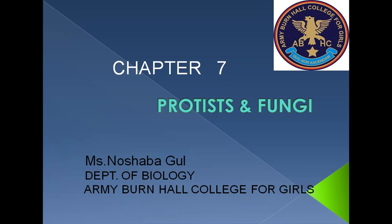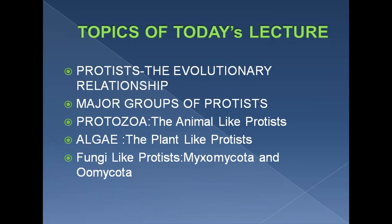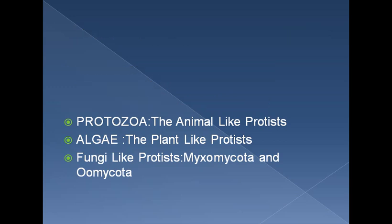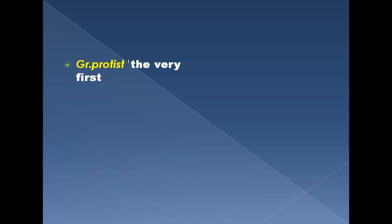Topics of today's lecture include Protista, the evolutionary relationships, and the major groups of protists, which include animal-like protists (protozoa), plant-like protists (algae), and fungi-like protists (Myxomycota and Oomycota). The meaning of the term Protista comes from the Greek word meaning 'the very first,' as these were the first eukaryotes to evolve.